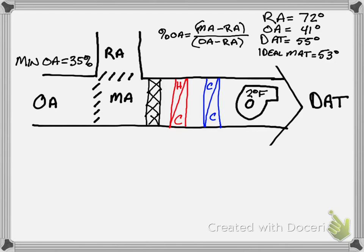So what we do is we take the values that we know and we test our hypothesis to see if we can meet our heating and cooling load with economizer control only. We're going to plug this into the equation here. Percentage of OA equals 53, our ideal mixed air temperature, minus 72 over 41 minus 72.